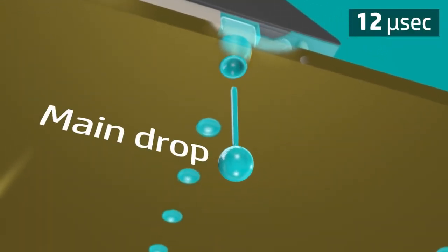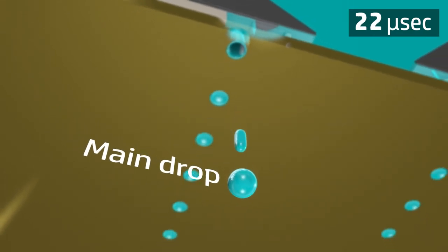Drop ejection typically produces a main drop and smaller trailing drops called satellites.